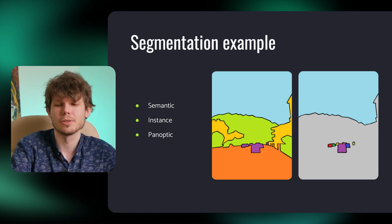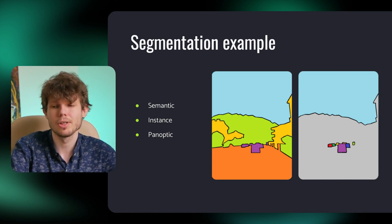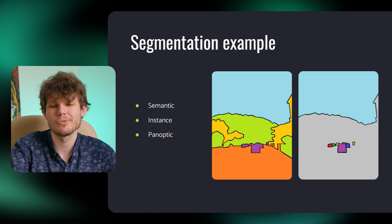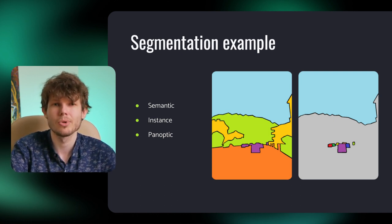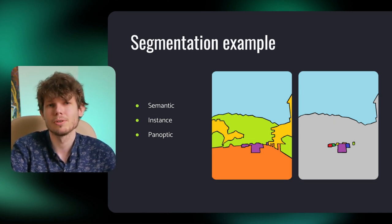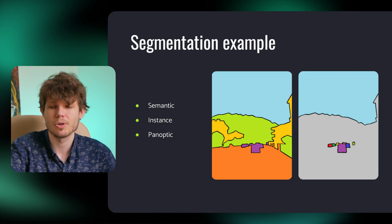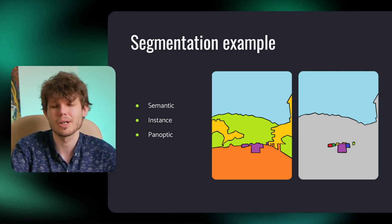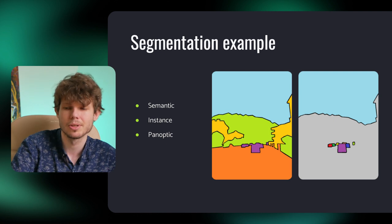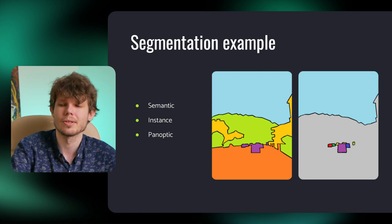And there comes instance segmentation. In this case, we will label each object of interest independently, so different cars will be labeled as different objects. Usually, we label only the interesting objects themselves, but not the background region, so it corresponds to what you see in the right picture. And panoptic segmentation works on both issues — each pixel has two labels: the label of the region and the label of the object's definitive instance.